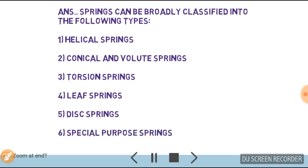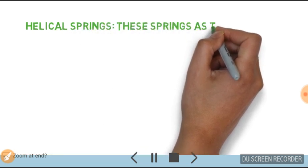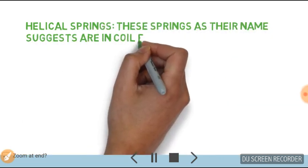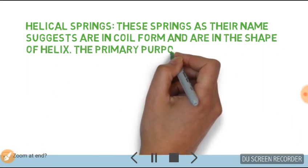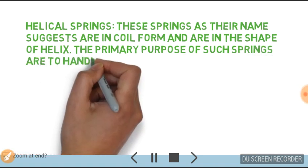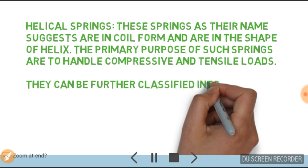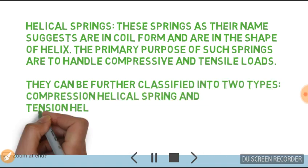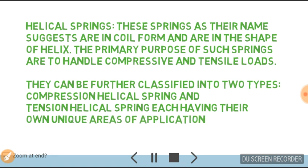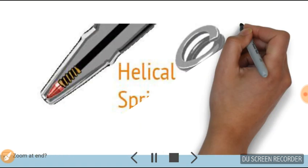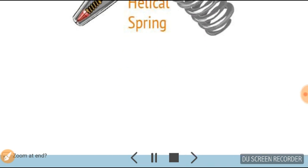Helical springs, as their name suggests, are in coil form and are in the shape of a helix. The primary purpose of such springs is to handle compressive and tensile loads. They can be further classified into two types: compression helical springs and tension helical springs, each having their own unique area of application. The best example of a helical spring is a pen.